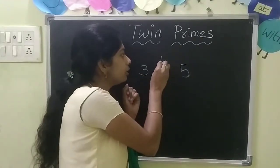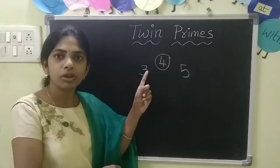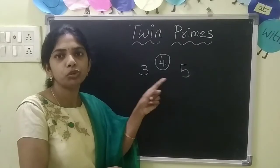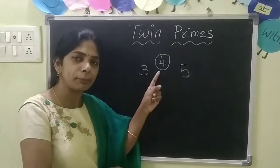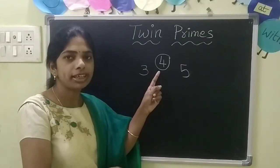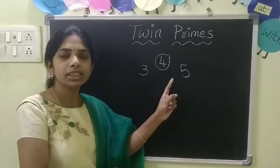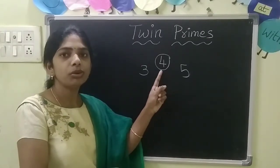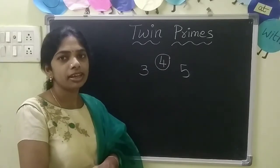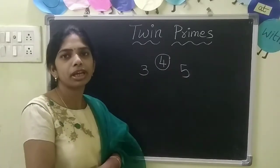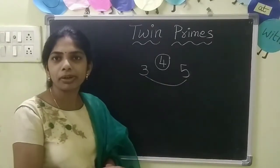So what is the number in the middle? 4. Only one number is there between these two prime numbers. And 4 is a composite number, because it has more than two factors. So the prime numbers which have one and only one composite number between them — then 3 and 5 are twin primes.